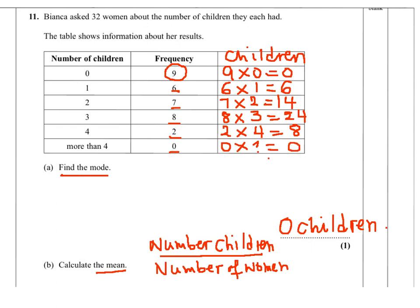So the total number of children from these 32 women will be the sum of all of this. So it's 0 plus 6, that's 6, plus 14, that's 20, plus 24, that is 44, plus 8, that's 52.